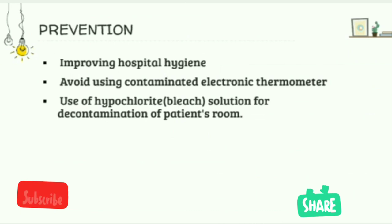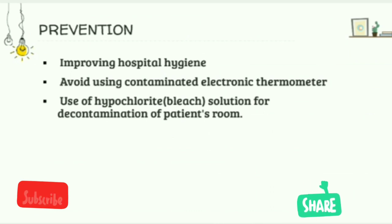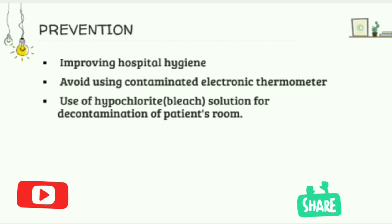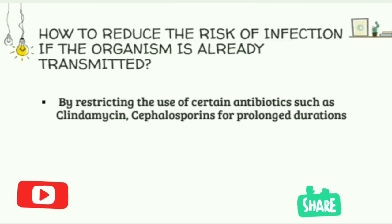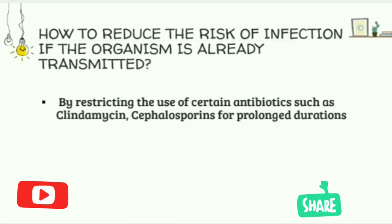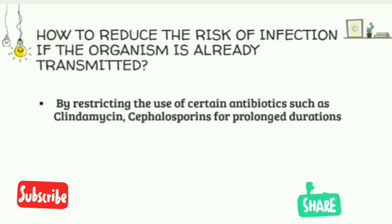Transmission of C. difficile can be prevented by improving hospital hygiene, avoiding contaminated electronic thermometers, and using hypochlorite or bleach solution for decontamination of patient rooms. To reduce the risk of infection once the organism is already transmitted, restrict the use of certain antibiotics such as clindamycin and cephalosporins for prolonged durations.